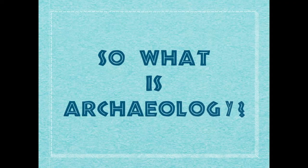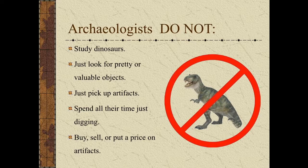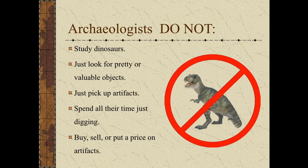So what actually is archaeology? Let's talk about what archaeologists don't do. Archaeologists do not study dinosaurs. They don't just look for pretty or valuable objects, although that could be part of it. They don't just pick up artifacts when they find them — they have to carefully document exactly where they found them. They don't spend all their time just digging, although they do spend a fair amount of time out in the field digging. And archaeologists don't buy, sell, or put a price on artifacts. They use artifacts to further the cause of history and put things in museums.